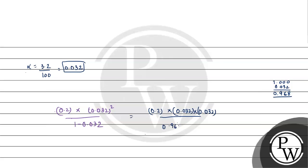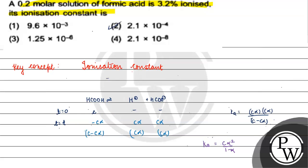When we solve this, we get 2.1×10⁻⁴. The correct answer to this question is Option 2. I hope you understood it well. Thank you and all the best.